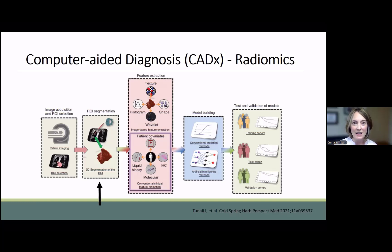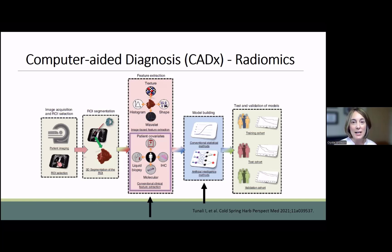Segmentation is analogous to a pathologist reviewing slides. However, radiomics takes advantage of the entire scan, analyzing all of the pixels within an image, including the nodule and the surrounding lung parenchyma — it is not restricted to a small amount of tissue on a slide. Radiomics then uses algorithms to combine the information obtained from the imaging with clinical and pathologic data to develop models, which can be used to predict histology, molecular mutations, tumor behavior, and tumor response to treatment.